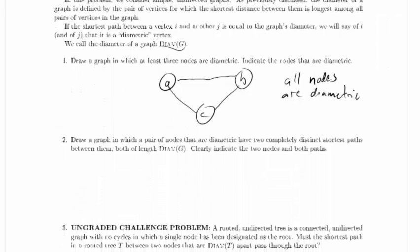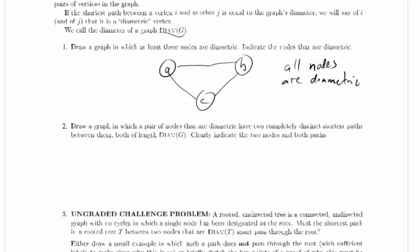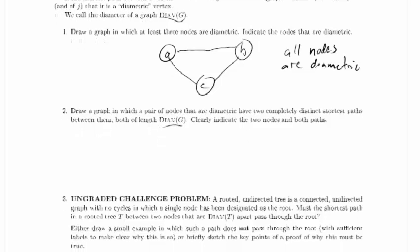Problem 2: Draw a graph in which a pair of nodes that are diametric have two completely distinct shortest paths between them, both of length diam(G). Clearly indicate the two nodes and both paths. Well, there are two paths between say A and C up here. One of the paths is of length one. I guess maybe we should label these. So one of these paths is of length one, but the other one's of length two, so they're not both shortest paths.